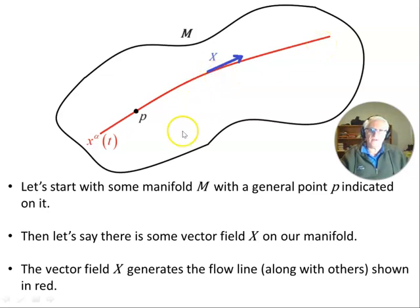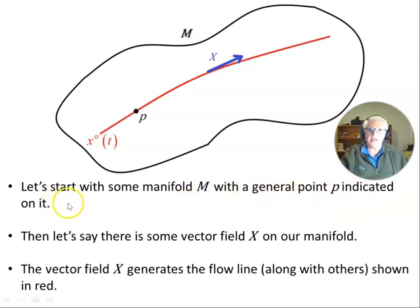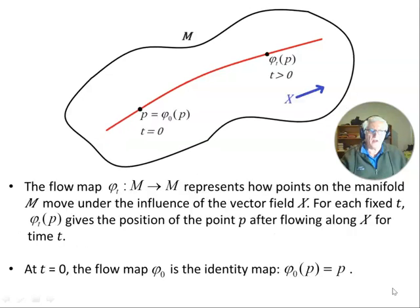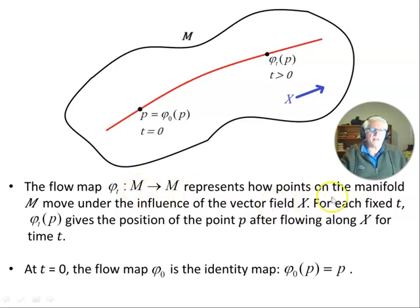We have our manifold M with a flow line picked out. The vector field X on this manifold generates these flow lines — the vector X is tangent to the flow lines. Here's a point p, and in local coordinates you can say this flow line is x^α(t). Now, starting with some manifold M with a general point p, there is some vector field X on our manifold. The vector X generates the flow line — only one is shown in red here.